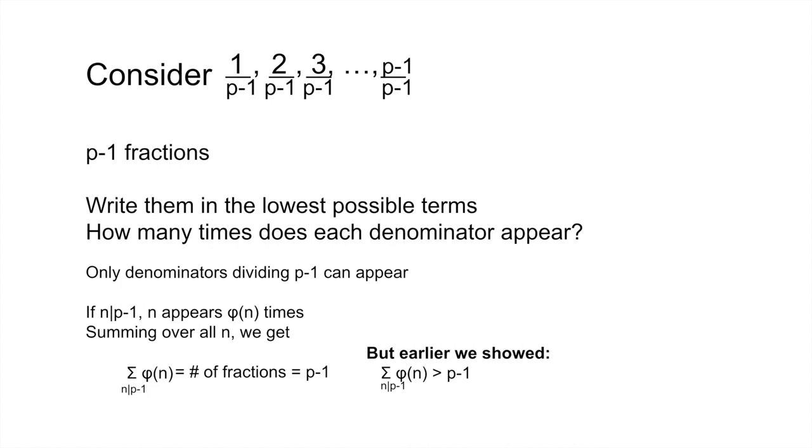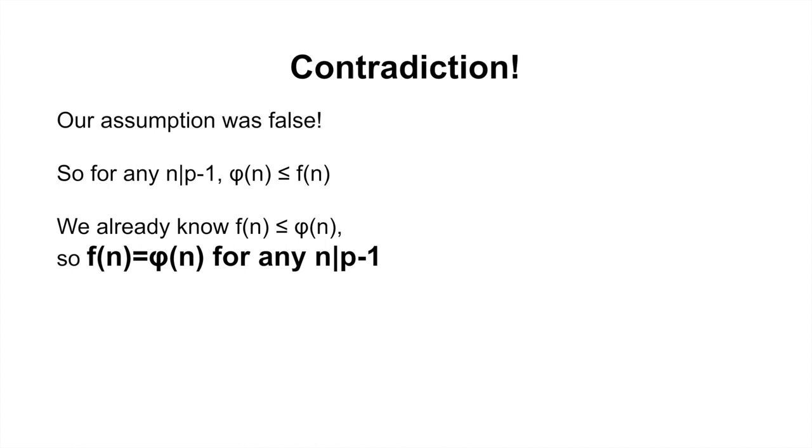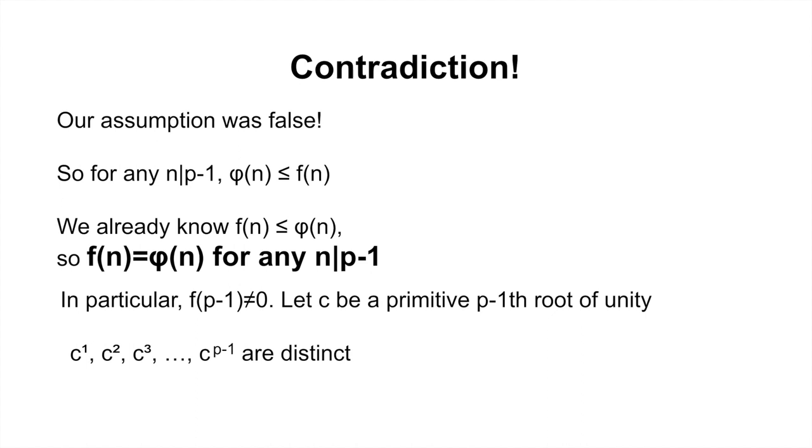So therefore, we have reached a contradiction. Therefore, our assumption that f of n is less than phi of n for some n that divides p minus 1 must be false. We already have that f of n is less than or equal to phi of n. So therefore, f of n and phi of n must be equal. In particular, for n equal to p minus 1, there are phi of p minus 1 primitive p minus 1 roots of unity. Let c be one of these. Then c, c squared, c cubed, all the way up to c to the power of p minus 1 are distinct. And hence, c generates Z over pZ star. So therefore, Z over pZ star is cyclic and we are done.